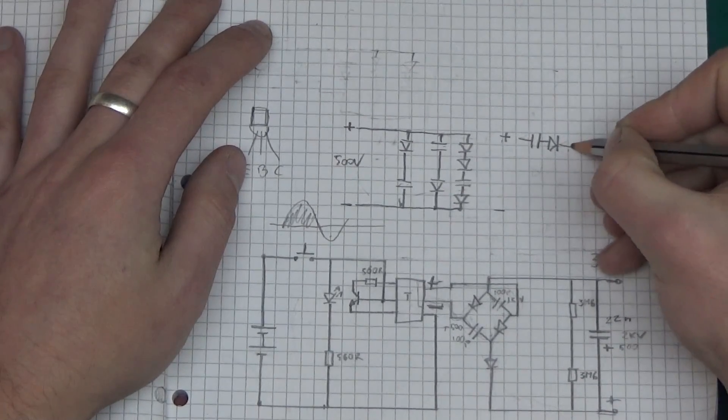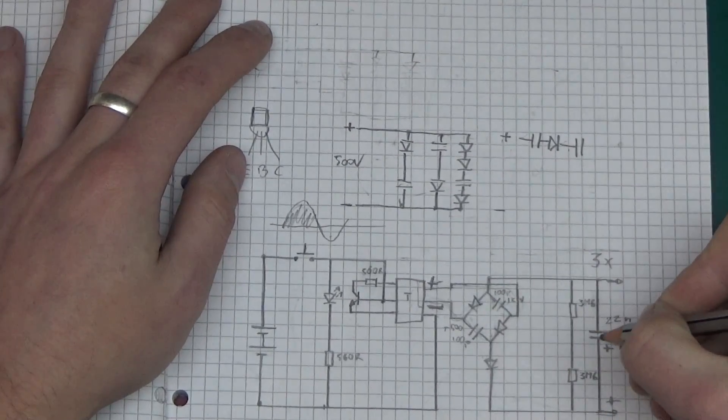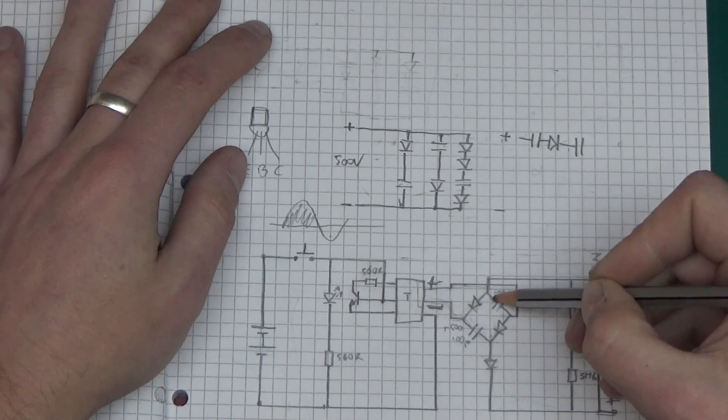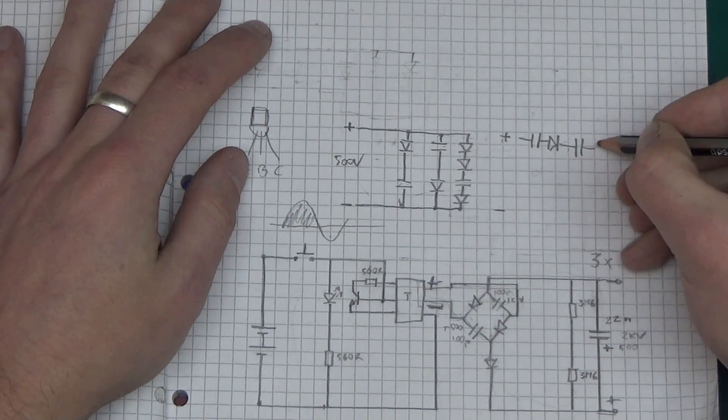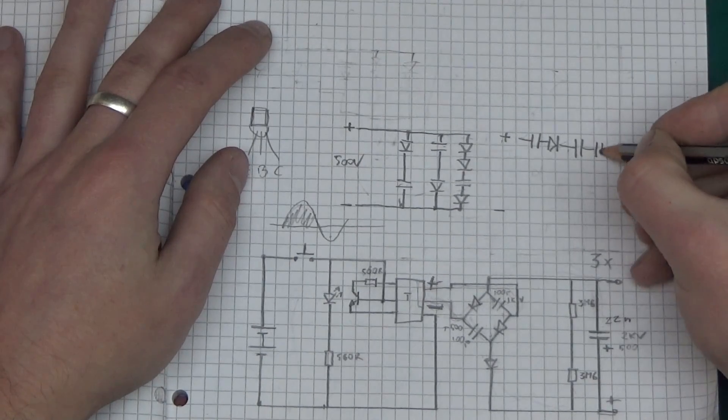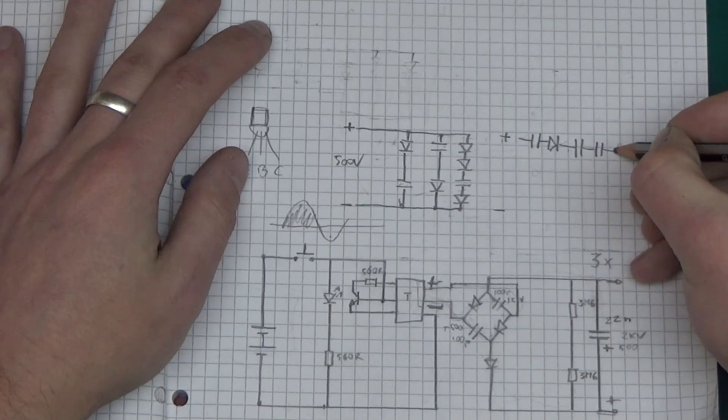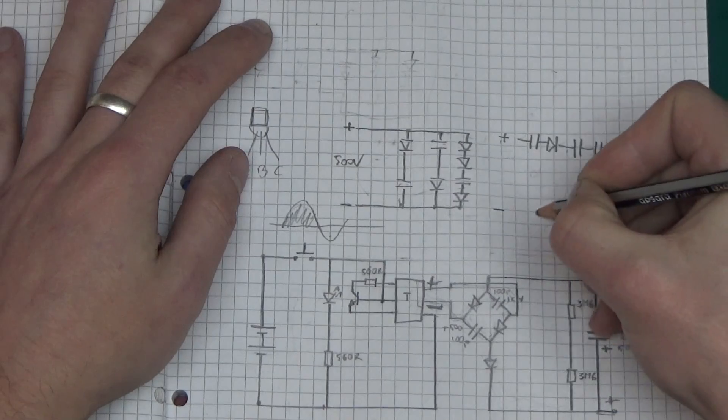Then we've got another cap, this one here. So when it comes here the only thing it can do is go through this cap and back into positive. One more capacitor, sorry, back into negative.